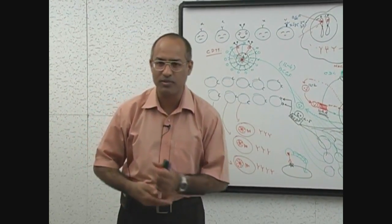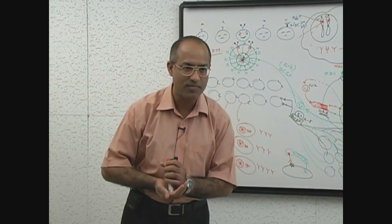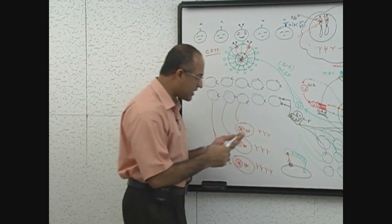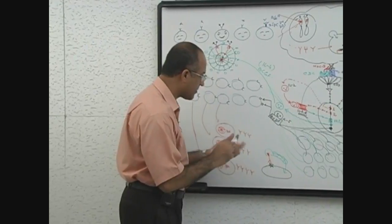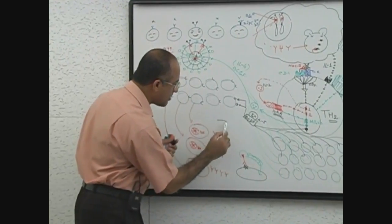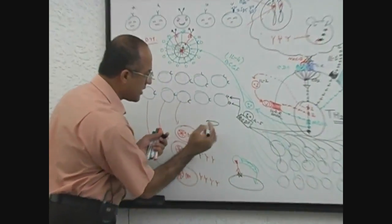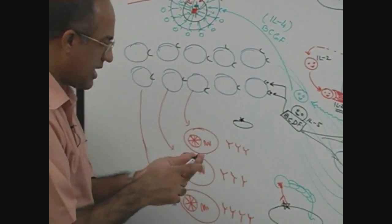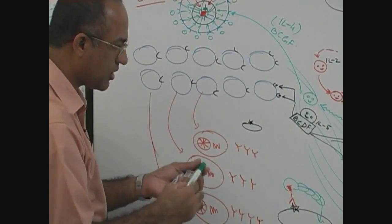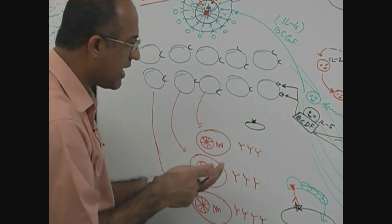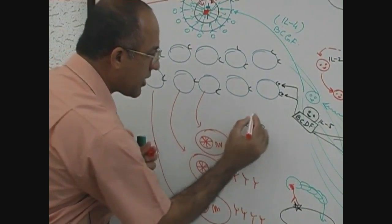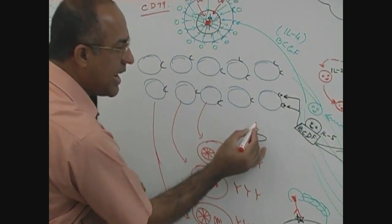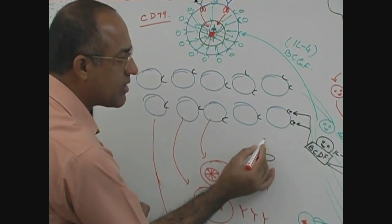That's a very ruthless way to kill bacteria. Or complement can do one more thing. This is the bacteria — here is the antigen — and what will come here? The antibody. The antibody becomes active.